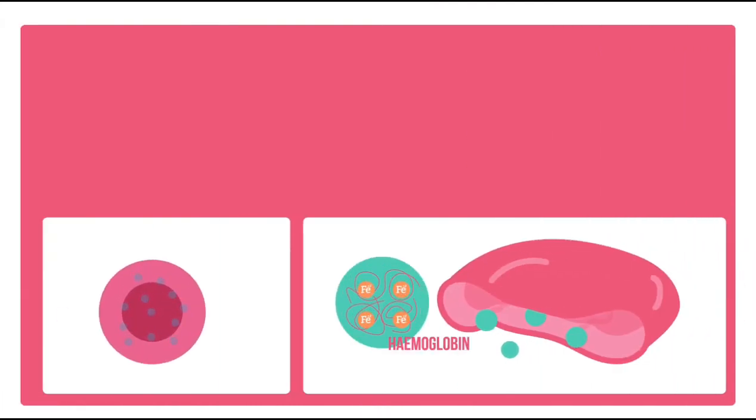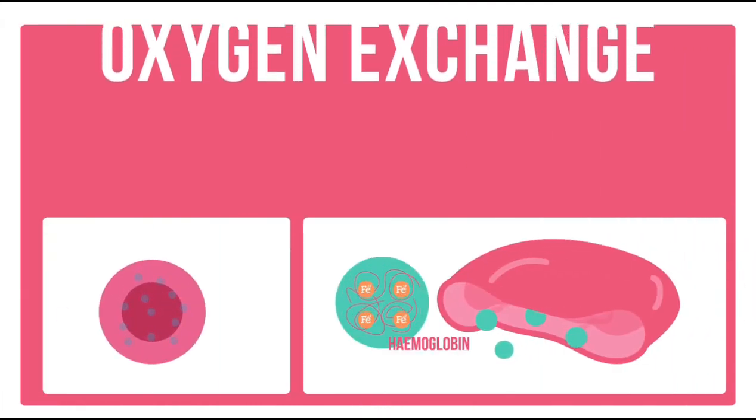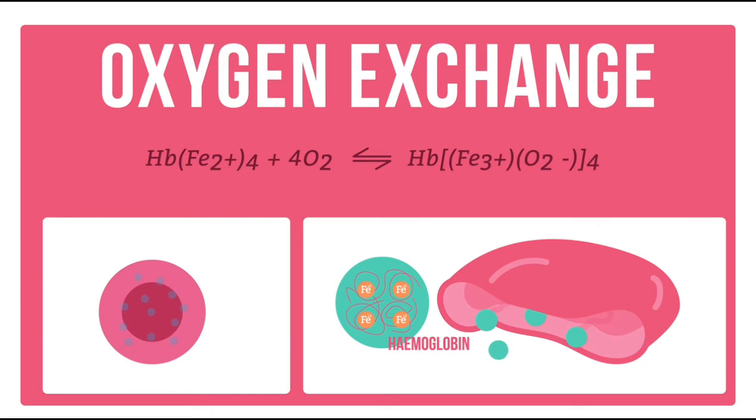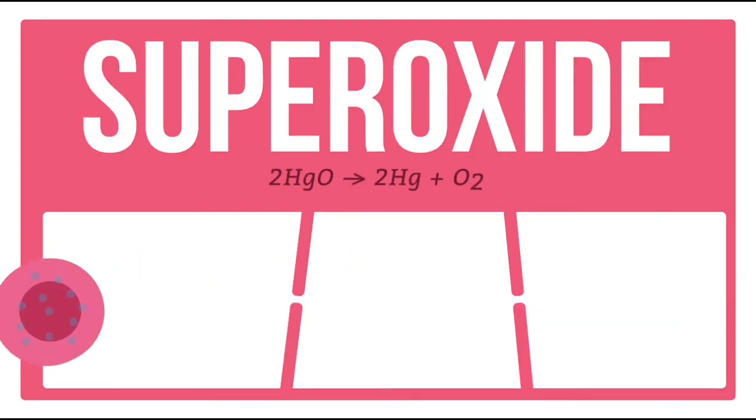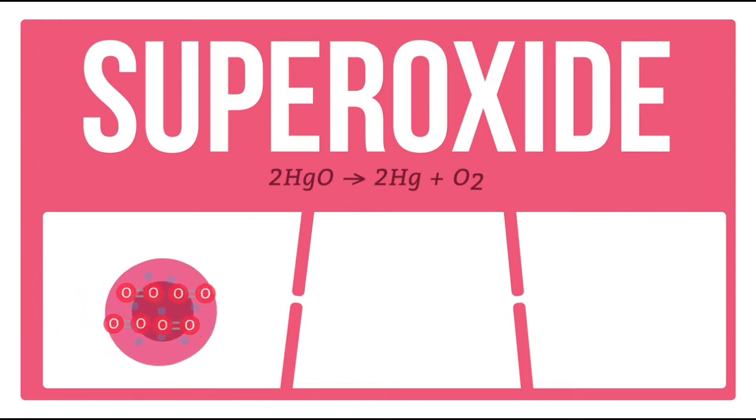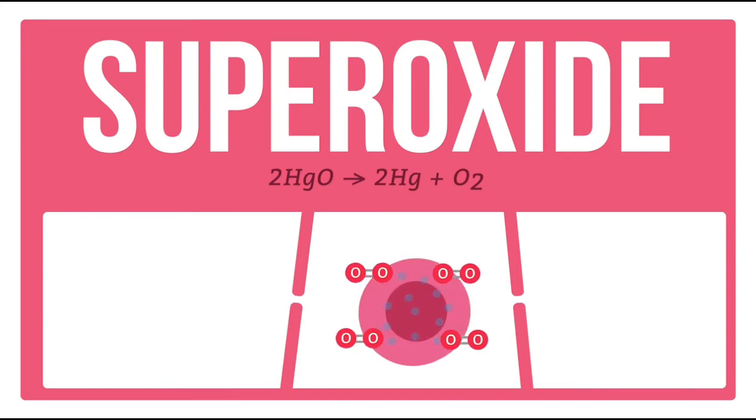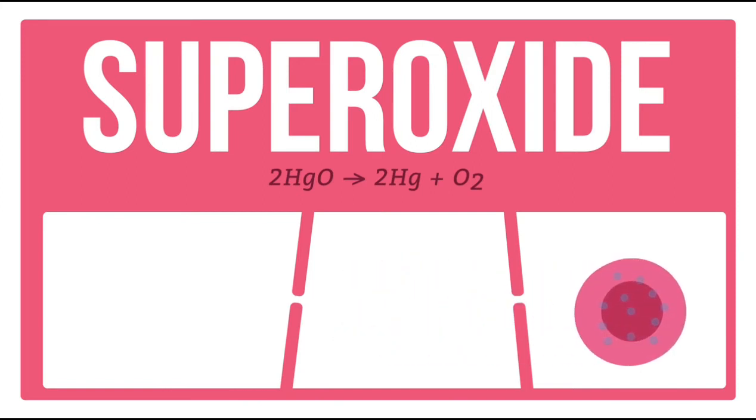Hemoglobin in blood carries oxygen around the body by oxygen exchange reactions. Four iron 2+ ions sit in the middle of a porphyrin ring. When oxygen binds, the iron 2+ reversibly oxidizes. The negatively charged oxygen is called a superoxide. When it gets to where it is needed in the body, it is released and the iron is reduced back to iron 2+.